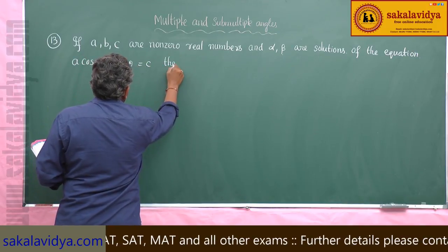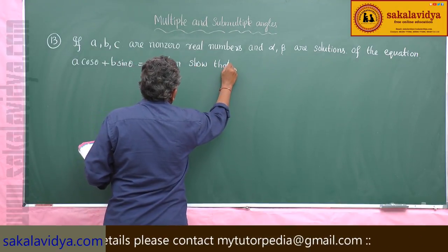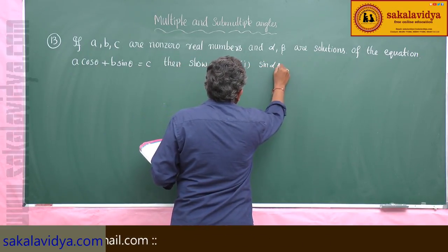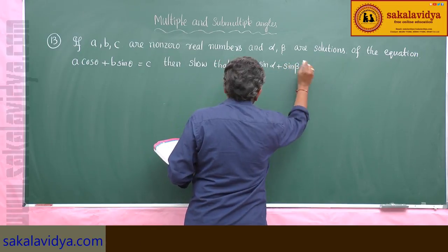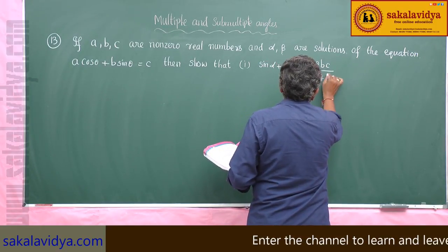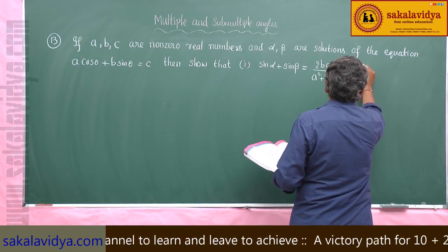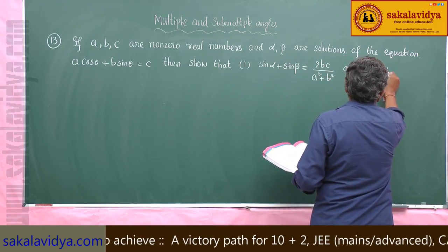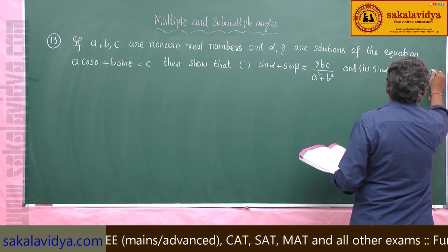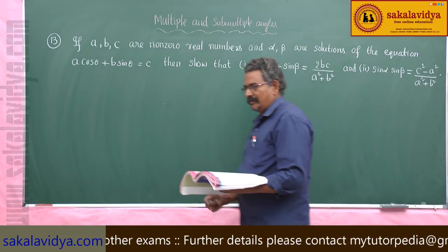Then, show that: first, sin α plus sin β equals 2BC over A² plus B²; and second, sin α times sin β is equal to C² minus A² over A² plus B².